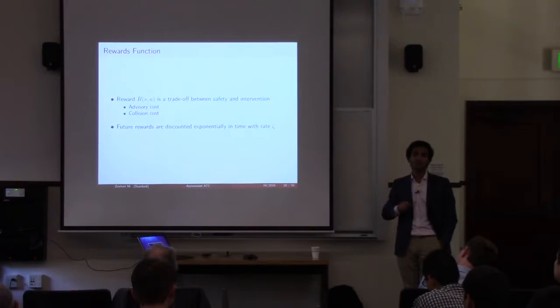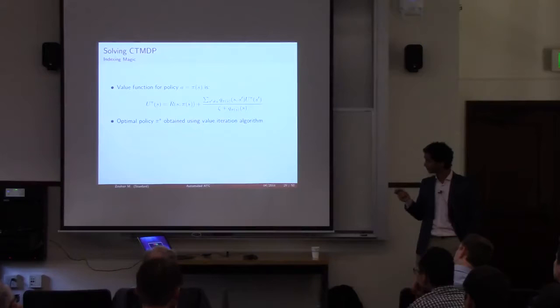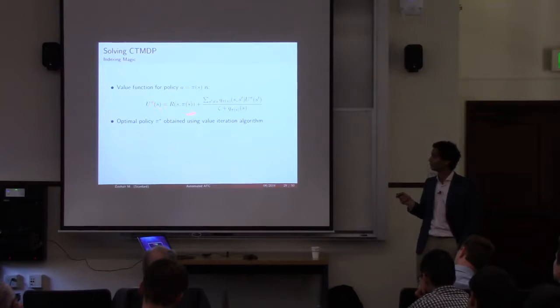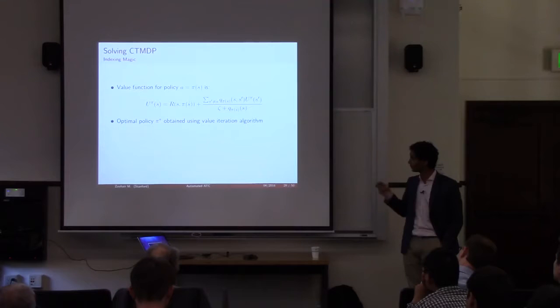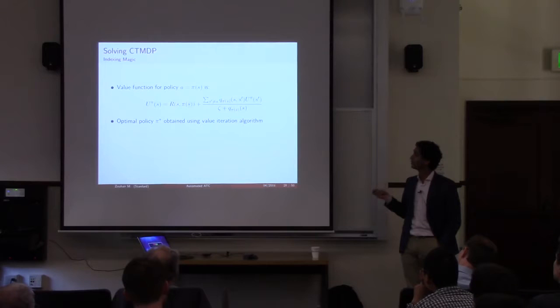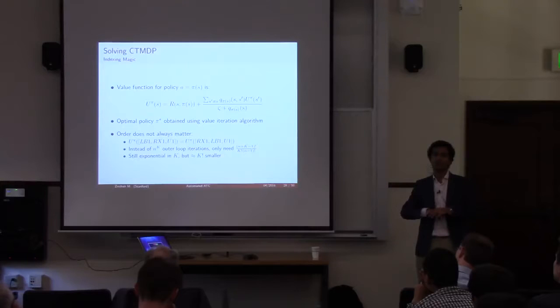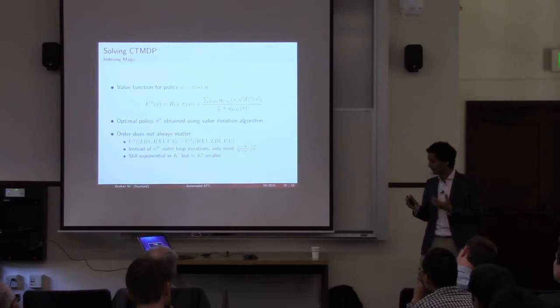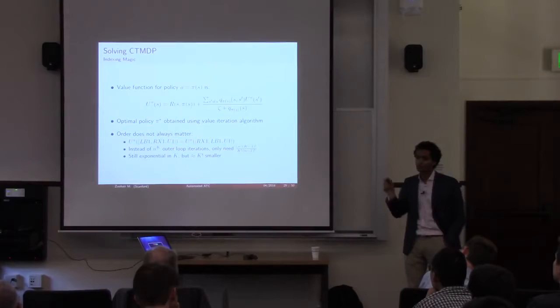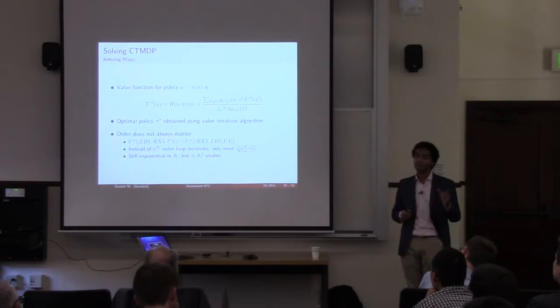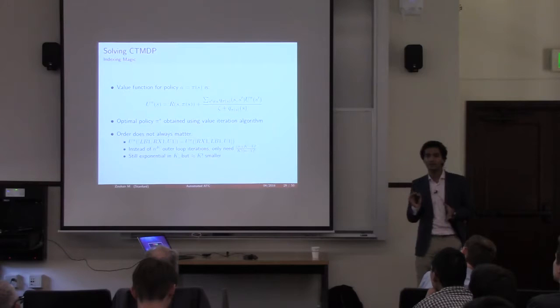We solve the CTMDP using dynamic programming with value functions. The idea is that there's a value to being in a certain state — the reward for being there plus discounted probabilities of being in next states. Starting with some initialization and iterating, you eventually converge to an optimum. One of the first tricks to take advantage of problem structure is recognizing a sense of anonymity: value functions should be invariant under permutations of the two aircraft states. This allows us to iterate only over combinations rather than permutations, yielding about a K-factorial saving. For four aircraft, that's about 24 — the difference between running in one hour versus a whole day.